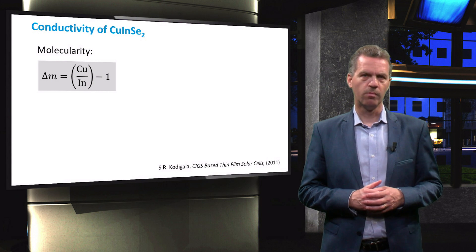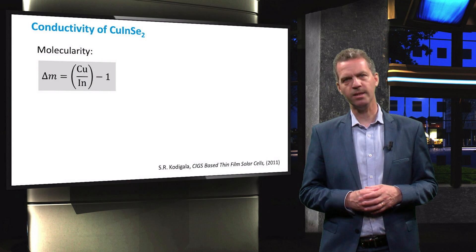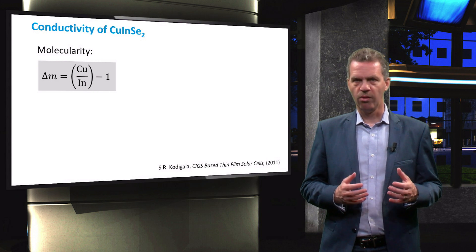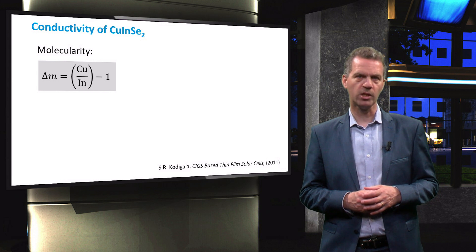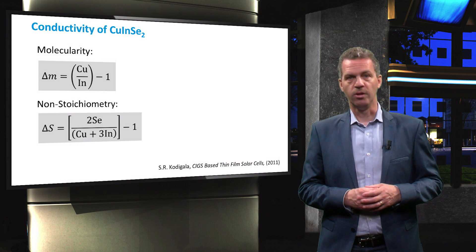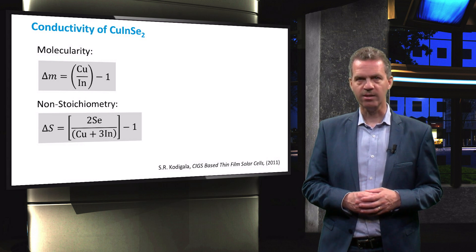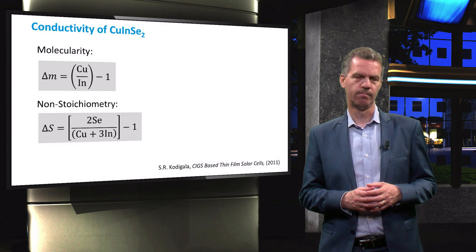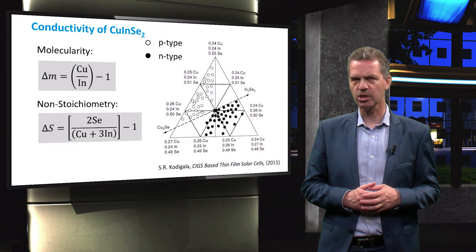In the previous lecture series, we discussed that a p- or n-type material can be obtained by adding impurity atoms to the structure. However, the type of conductivity in CIGS is determined by the intrinsic chemical composition of the material. p- or n-type conductivity can be obtained by changing the composition of the material in two different ways. The so-called molecularity of the copper-indium diselenide tells if the composition is copper-rich or indium-rich, while the non-stoichiometry tells if the material is selenium-rich or poor. This diagram shows the type of conductivity for a large number of compositions.